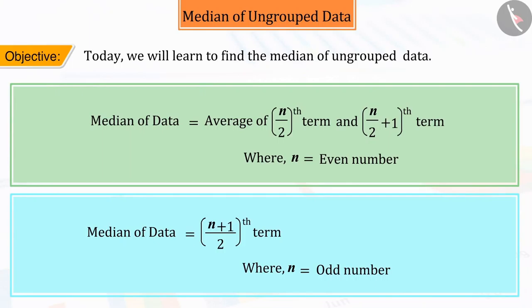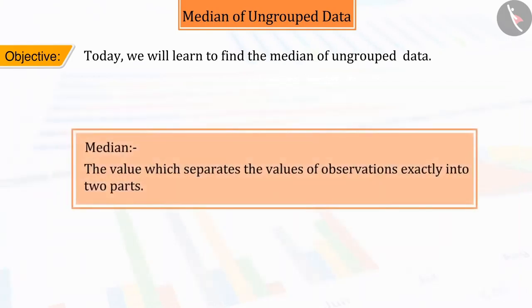Let us start with the median of ungrouped data. We can assume from the name median that there must be some involvement of a center point here. This means that the median is the value which separates the values of observations exactly into two parts.